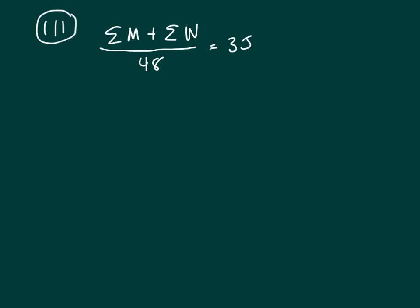And what I need to find, I need to find the sum of the women and then divide that by 26, and I'll have the answer. So what do we have here? Let's multiply both sides by 48.